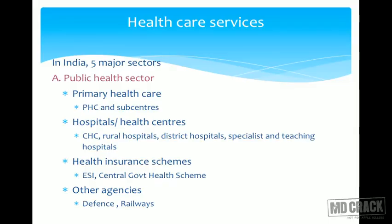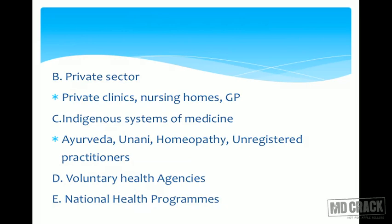In India we have five major sectors providing health care services. The first is the public health sector, which includes primary health care at PHC and sub-centre level, hospitals and health centers such as CHCs, rural hospitals, district hospitals, specialist and teaching hospitals, health insurance schemes such as ESI and Central Government Health Scheme, and other agencies with their own health hierarchy — such as defence and railways, which have their own health systems.